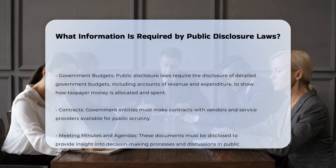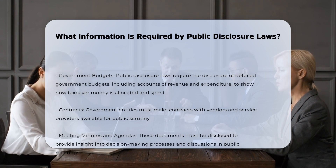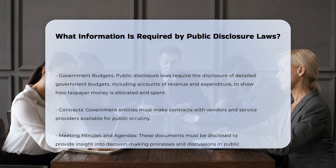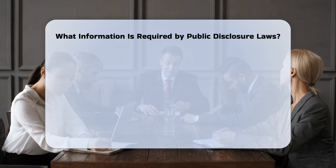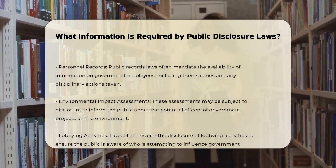One common requirement is the disclosure of government budgets. This includes detailed accounts of revenue and expenditure. Agencies must provide information on how taxpayer money is allocated and spent.